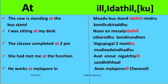The last example for 'at' is: 'He works at Mailapur in Chennai.' In Tamil: Awan mailapuril chennaiil velai saygiraan. Awan means he, mailapuril means 'at Mailapur', chennaiil means 'in Chennai', and velai saygiraan means 'works'. Here we are specifying a particular place in Chennai — Mailapur — so we use 'il'. Note that there is no difference between 'at' and 'in' for specifying a place in Tamil.